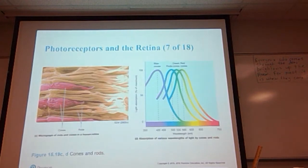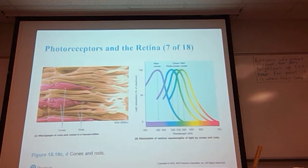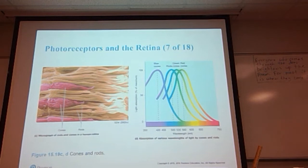Here is a micrograph of rods and cones from the human retina — the pinkish ones are cones and the orange ones are rods. Here we are also showing the blues, greens, and reds corresponding to the wavelengths of light absorbed by rods and cones. I will never ask you to remember which specific wavelength of light is absorbed by which rod or cone.